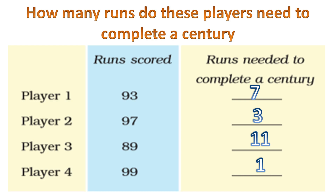Player 2 got 97 runs, so needs 3 more runs to complete a century. Player 3 got 89 runs, so needs 11 more runs. Player 4 got 99 runs, so needs just 1 more run to complete a century.